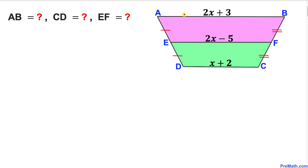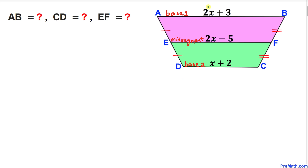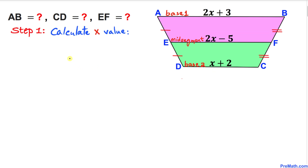Here's our very first step. Let's call the upper base Base 1 and the lower base Base 2, and this middle line I'm going to call the mid segment — some people call it the median. We can see that Base 1 is 2x + 3, Base 2 is x + 2, and our mid segment is 2x − 5.